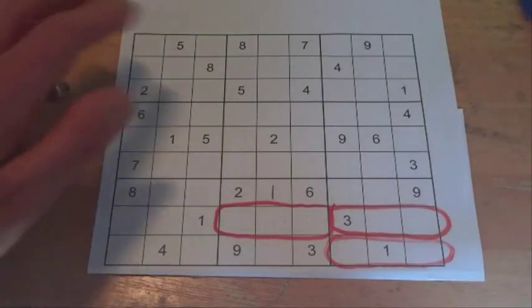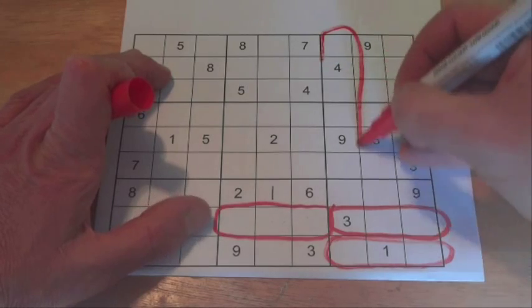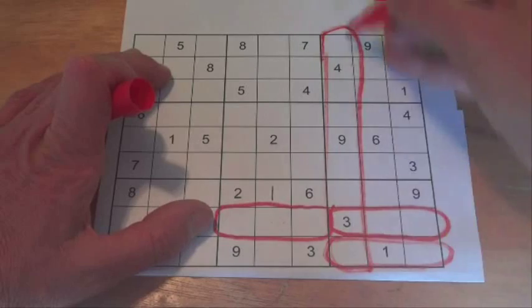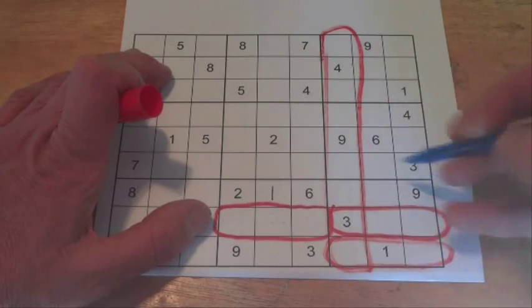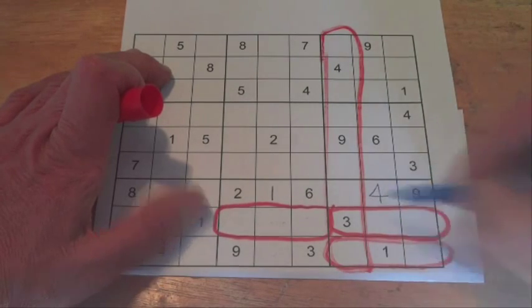And if we look up the top here, we've got a 4 up the top here, coming down and stopping 4 being put anywhere else in that column. So that leaves this little cell here. It's the only one left. So that one has to be a 4.